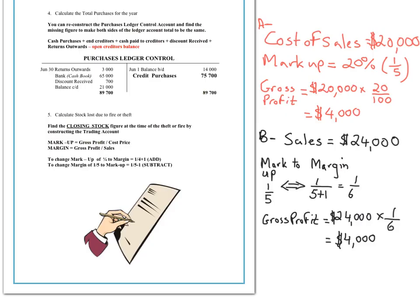The fifth and final method for working out incomplete records is to use the markup and margin as a way of finding the value of the closing stock. This is often quite confusing for many students because it's quite mathematical. I'll draw a quick summary of the difference between a markup and a margin, and then show you how to apply it to work out the missing closing stock figure.